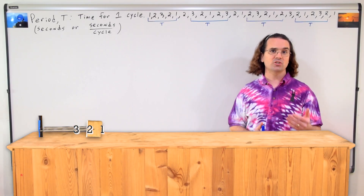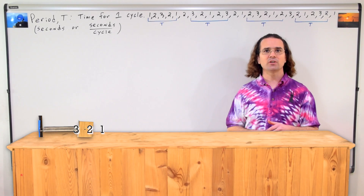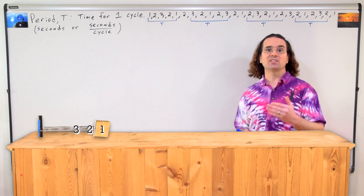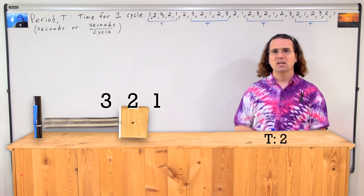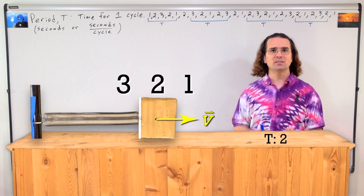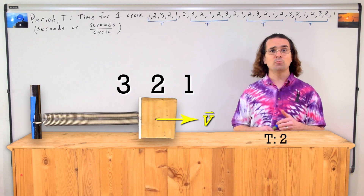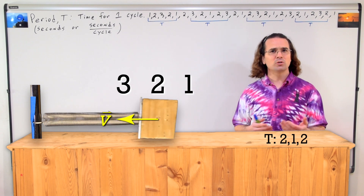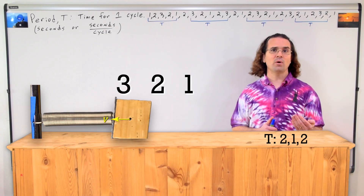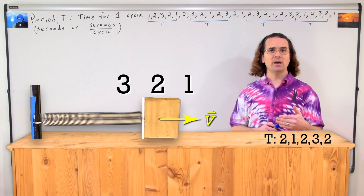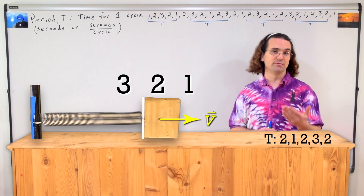Mr. P? Yes, Olivia? What if the object starts somewhere between those three positions? Sure. So then one full cycle would be when the object starts and ends at the same location and is moving in the same direction at the end as it was at the start. You can see this is true for position 2. If it starts at position 2 and is moving to the right, then the first time it gets back to position 2, it is moving to the left, which means it did not go through one full cycle. It has to continue all the way back to position 2 and be moving to the right before it has gone through one full cycle.